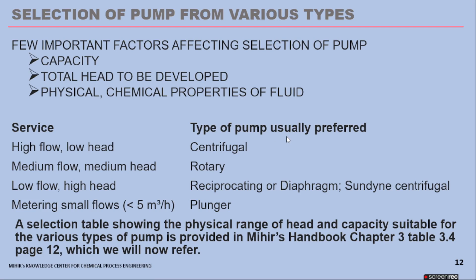A few important factors affecting selection of pump: capacity, total head to be developed, and the physical and chemical properties of the fluid. A summarized table for selection of pump from various types: for high flow, low head — go with centrifugal type; medium flow, medium head — rotary type; low flow, high head — reciprocating, diaphragm, or a sundyne centrifugal pump. Sundyne centrifugal pumps are a special type suitable for low flow, high head, operating at very high speeds of 12,000–15,000 RPM. For metering small flows less than 5 m³/hour, a plunger type is recommended. A selection table showing the physical range of head and capacity suitable for various pump types is provided in Mihir's Handbook, Chapter 3, Page 12.